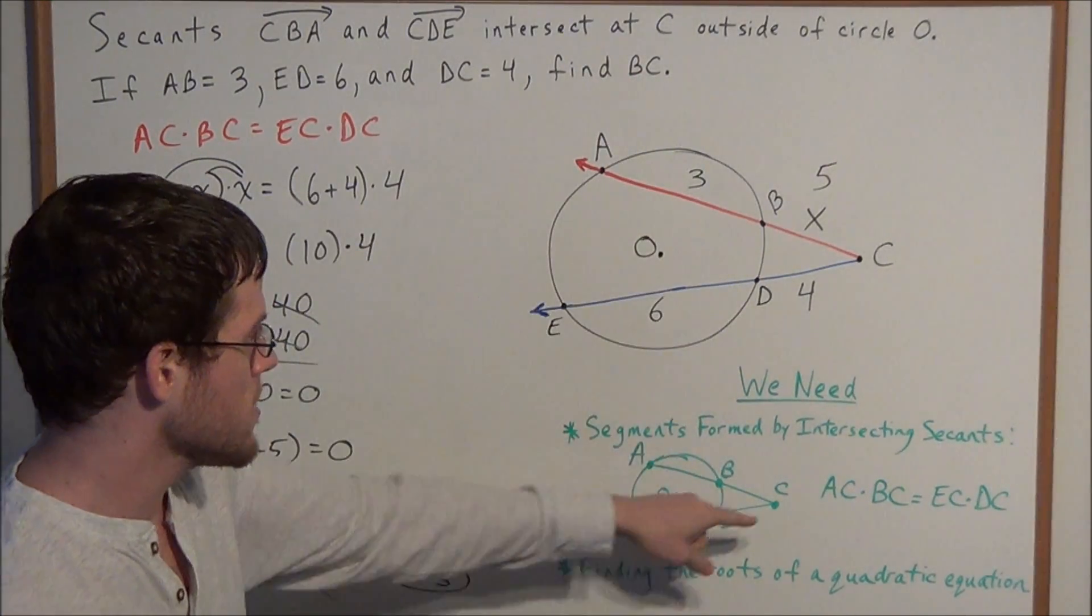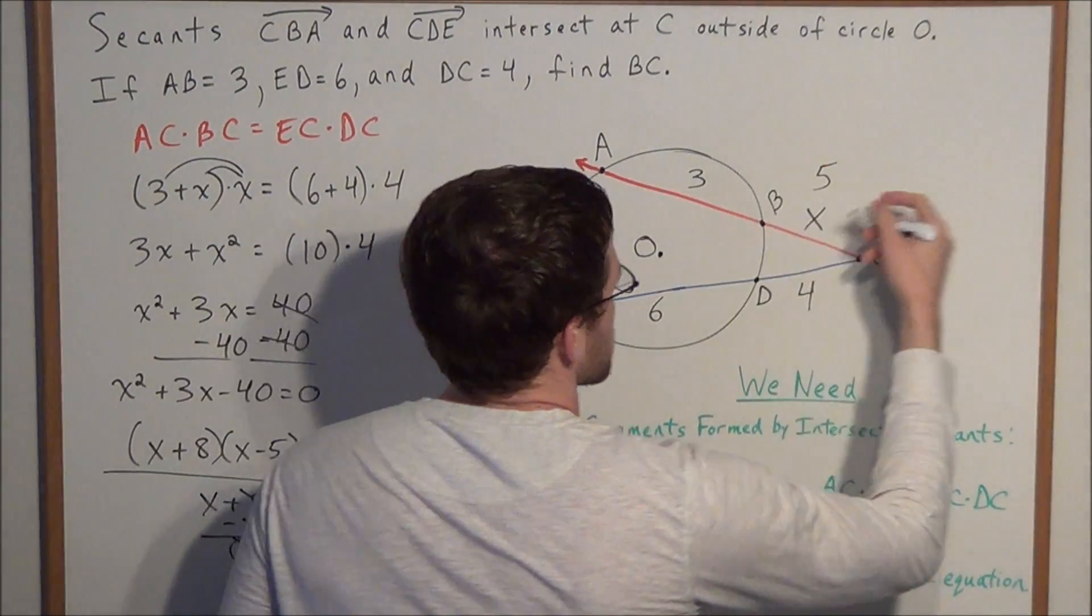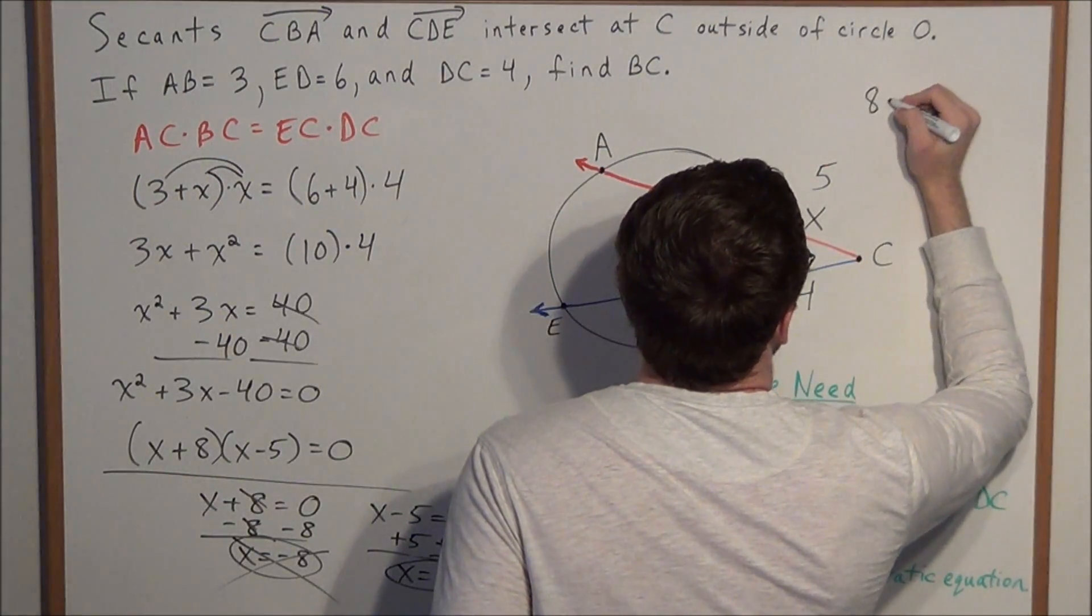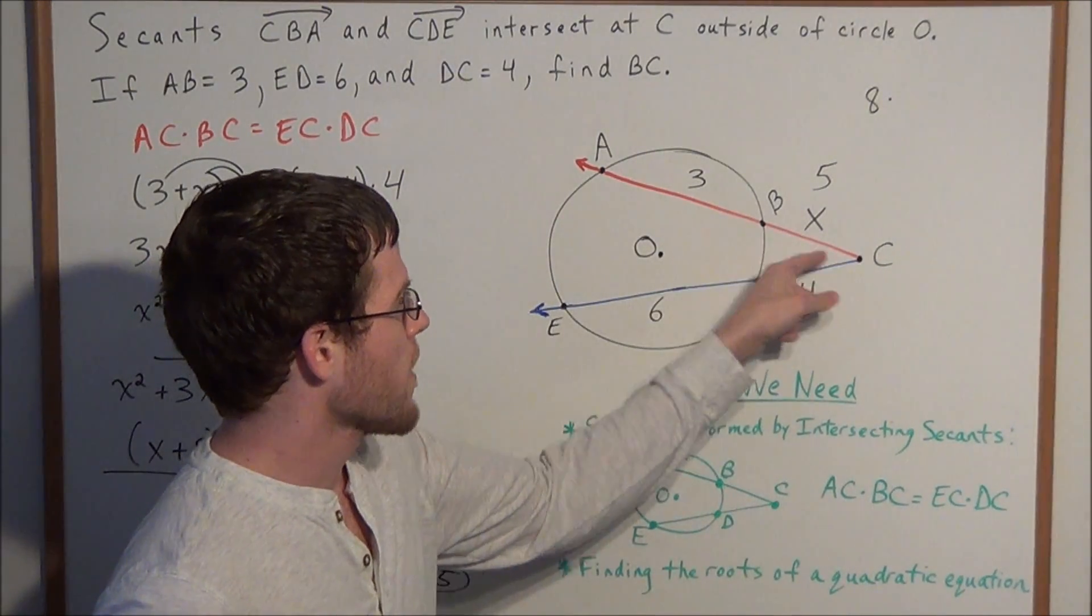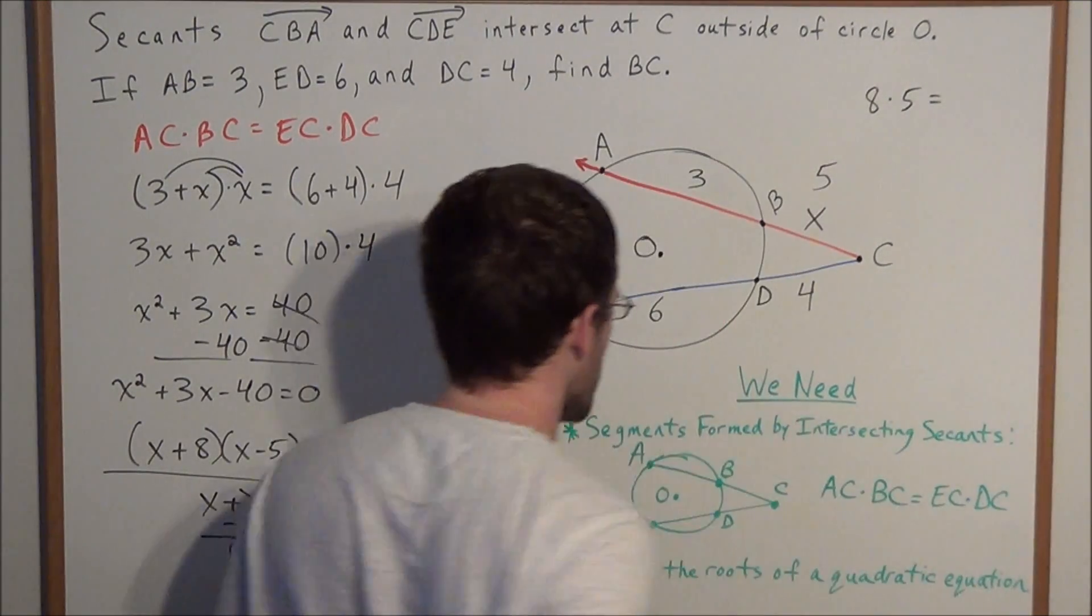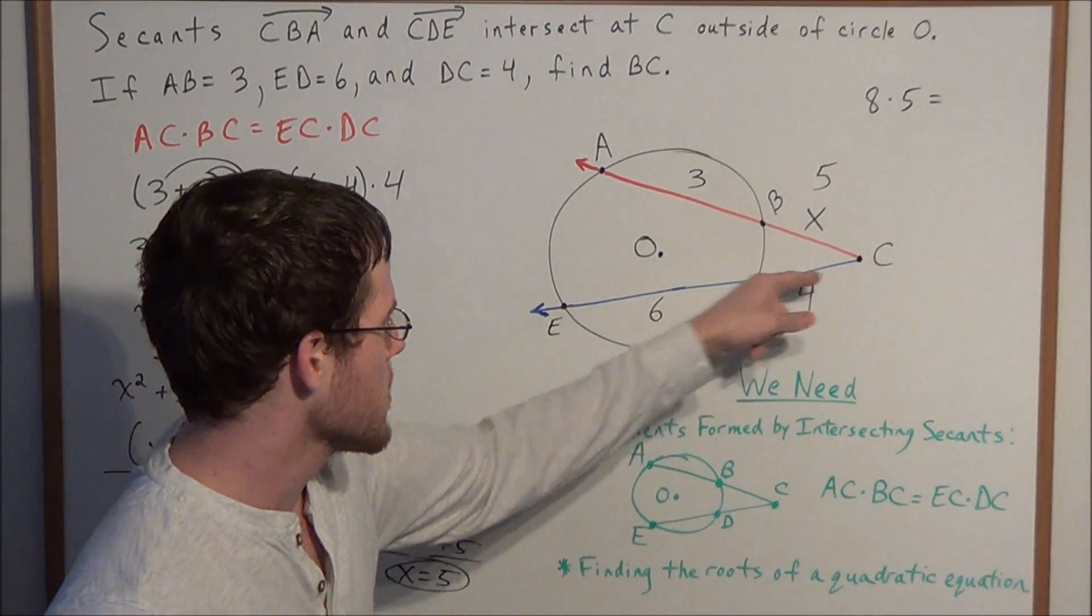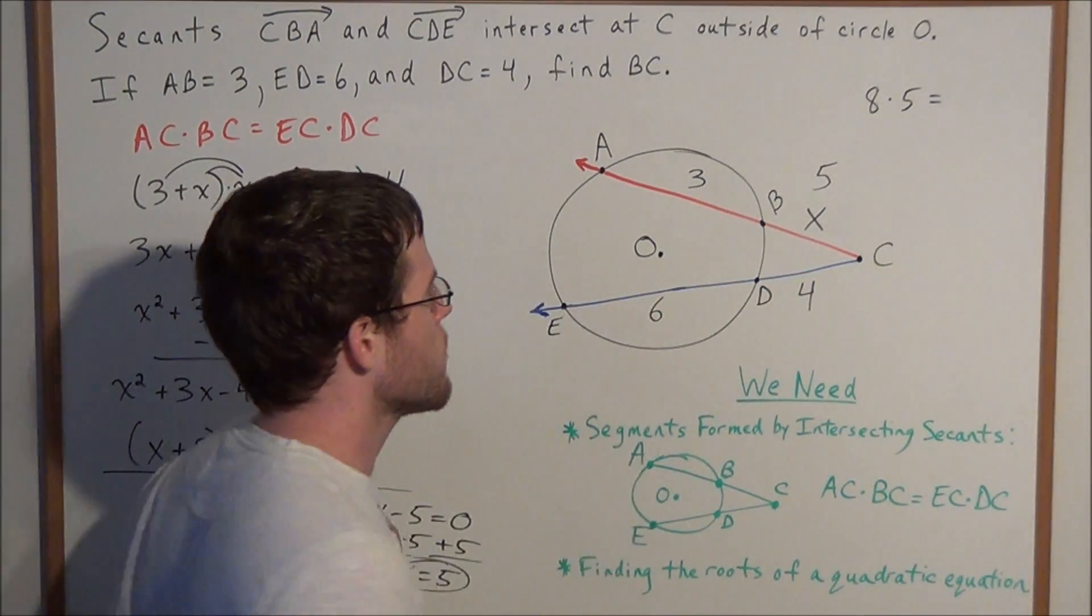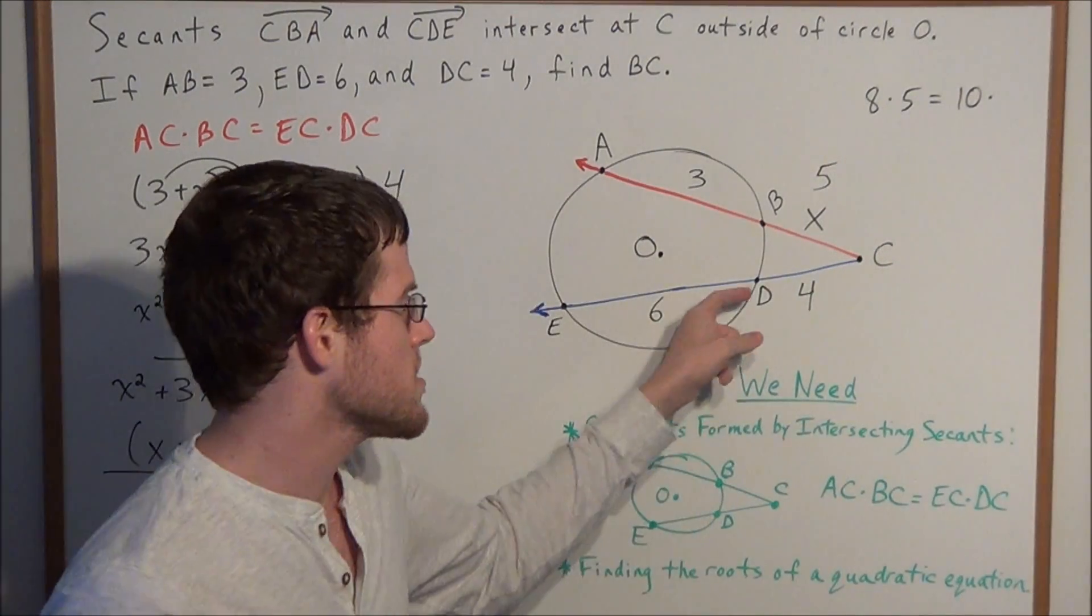We have AC times BC, or the length of the entire segment is 3 plus 5, so we have 8 times BC, which is the outer segment, and we just found BC to be 5. So 8 times 5 should equal EC, which is the entire secant segment here, and the entire secant segment is 6 plus 4, or 10. So we have 10 times the outer segment DC, which is 4.